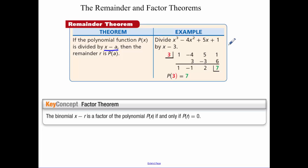And this is called synthetic substitution. So I'm making sure that it's x minus 3. I'm evaluating the function at 3 and I'm doing synthetic division to get that, so I know that p of 3 is equal to 7.